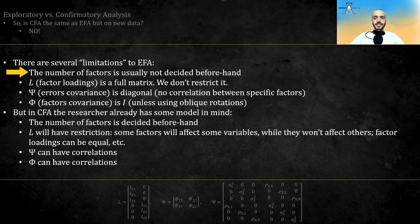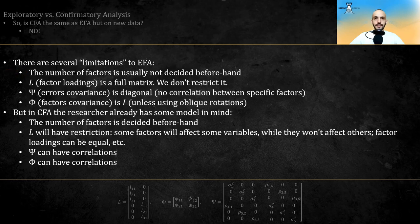First, the number of factors is usually not decided beforehand. Then L, the factor loadings matrix, is a full matrix. We don't restrict it. Psi, the error covariances, is a diagonal matrix. There are no correlation between specific factors. And finally, phi, the factor's covariance, is the identity matrix, unless using oblique rotations.